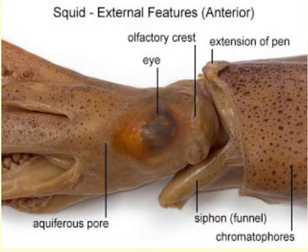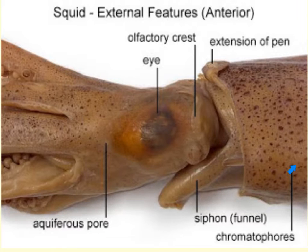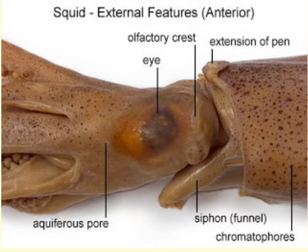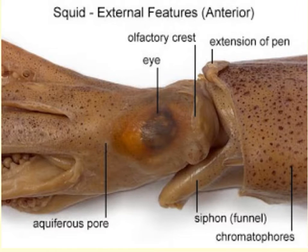One of the particularly unique features of cephalopods is their ability to change colors and appearance. This is achieved through specialized cells located on the skin called chromatophores. These cells can contract or expand via radial muscles, allowing the squid to change color and shape for camouflage. Additionally, some deep-sea cephalopods can also display bioluminescence.